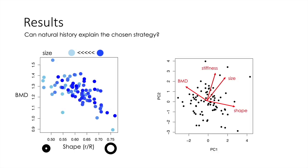In a PCA including BMD, shape, stiffness, and size, BMD and shape go in opposite directions, but stiffness and size are strongly related to each other and both are more or less orthogonal to the BMD-shape relationship.